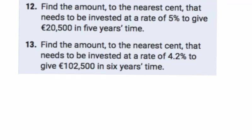Question 12: we're asked to find, to the nearest cent, the amount that needs to be invested at a rate of five percent to give €20,500 in five years time. So let's say this number that we invest is x. If we multiply x by 1.05 to the power of five — that's five percent over five years — it's going to end up as €20,500.